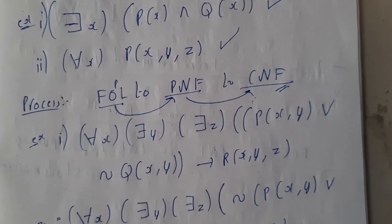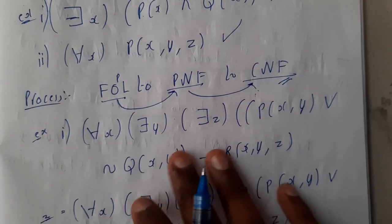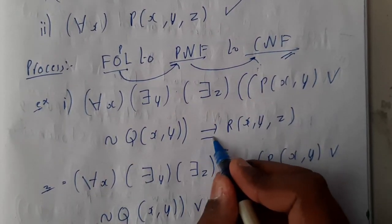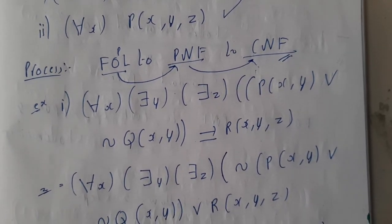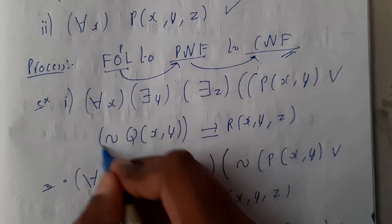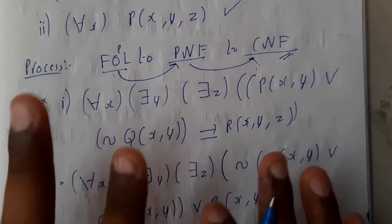Initially, we have given this equation. If you observe here, we are having implies symbol. So once you see implies symbol, for sure you will need to deduct it. So how we can deduct it? Let us assume this is our equation. I just forgot to keep the brackets, sorry.